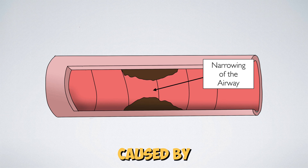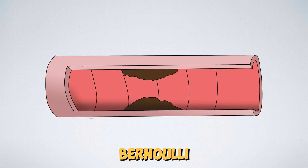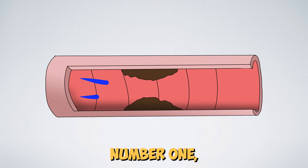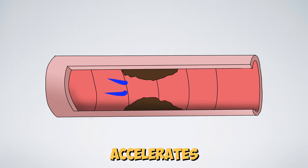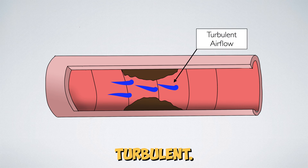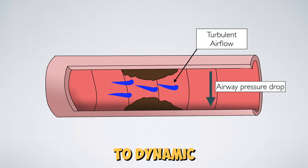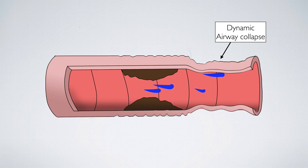Stridor is caused by narrowing of the airways. This produces two effects explained by the Bernoulli principle. Number one, air flow accelerates through the narrowing and becomes turbulent. And number two, airway pressure drops, leading to dynamic airway collapse.